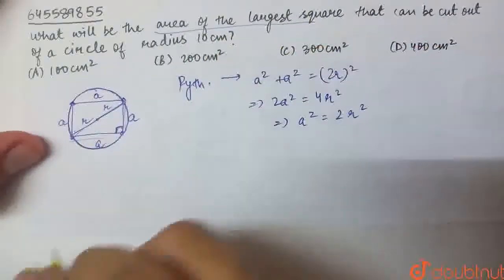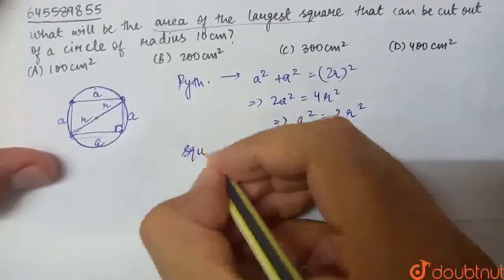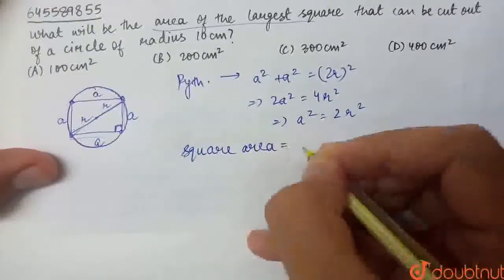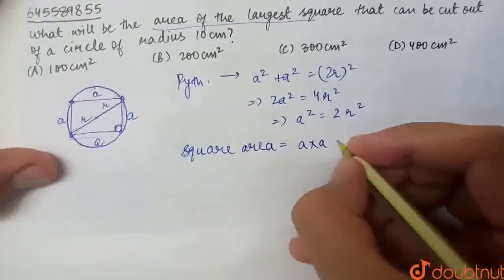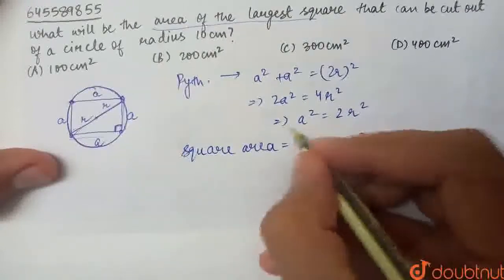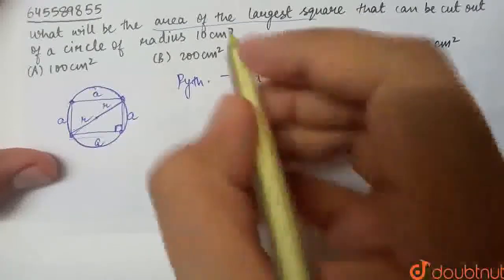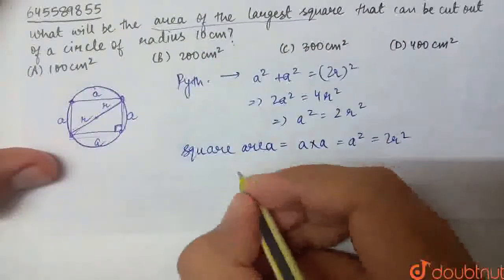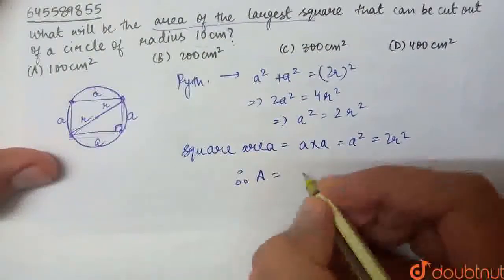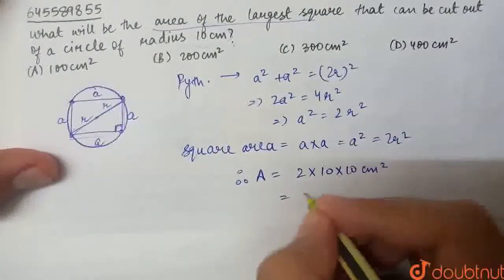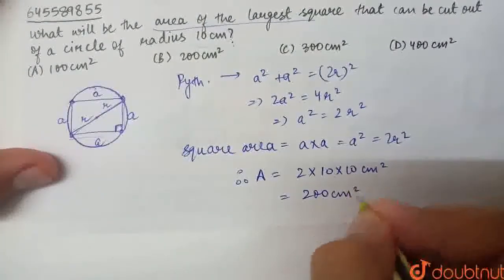Area of the largest square: if the side is A, that is equal to A square. A into A. Equal to 2R square. And R was given to us as 10 cm. Therefore, area will be 2 into 10 into 10 cm square. That is 200 cm square.